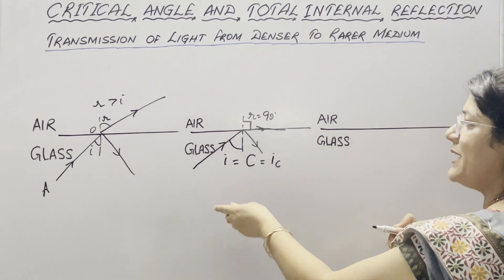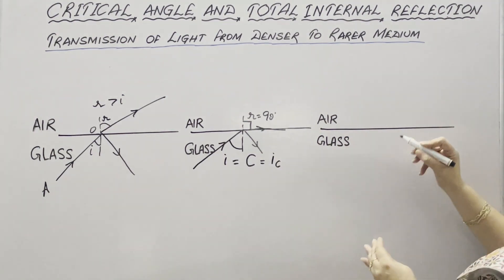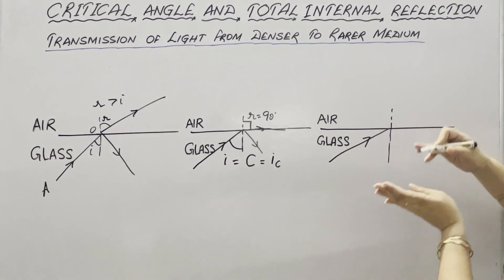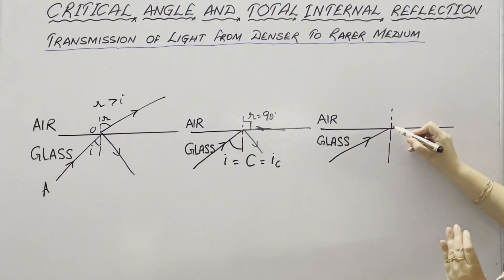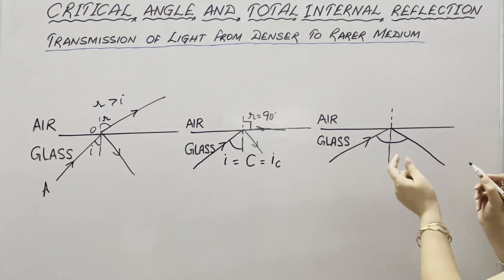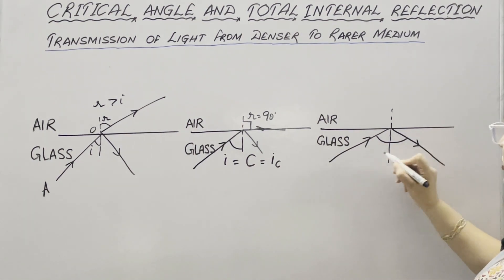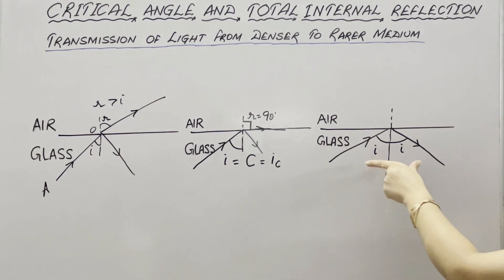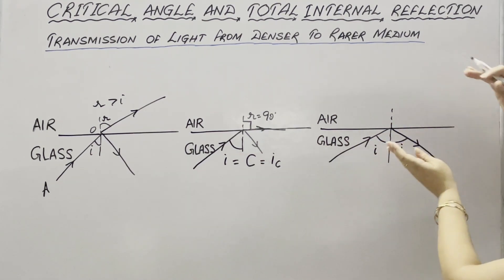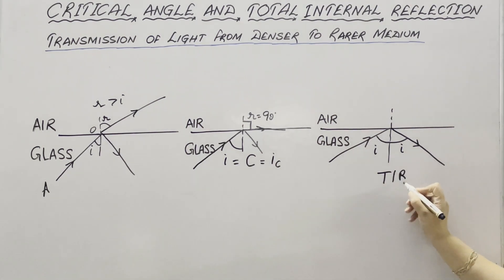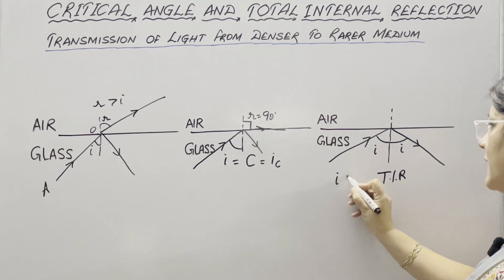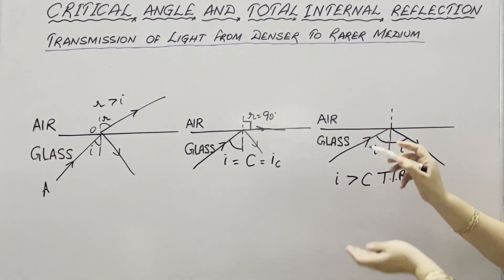After the critical angle, if we further increase the angle of incidence, a state reaches where no part is refracted in the rarer medium — all the light is reflected back into the same medium. This is known as TIR or total internal reflection, where angle i equals r. Two conditions must be satisfied for TIR: first, the angle of incidence must be greater than the critical angle; and second, the ray must be traveling from a denser medium to a rarer medium.